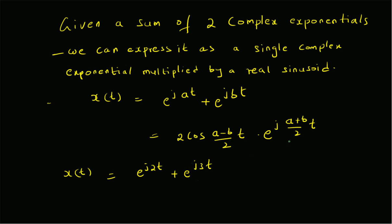So that is the general formula. For this special case e^(j·2t) plus e^(j·3t), what we can do is rewrite it as e^(j·(2.5 minus 0.5)·t) plus e^(j·(2.5 plus 0.5)·t).